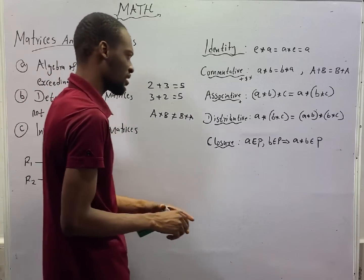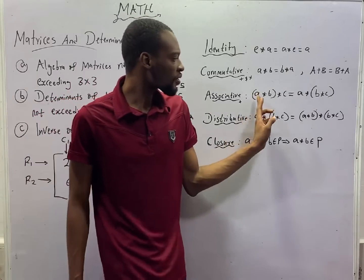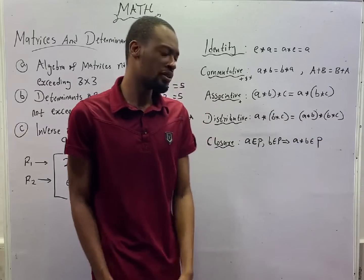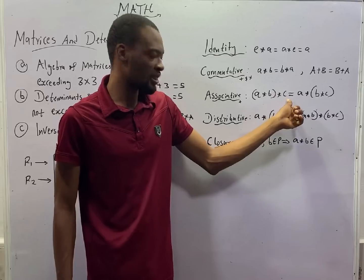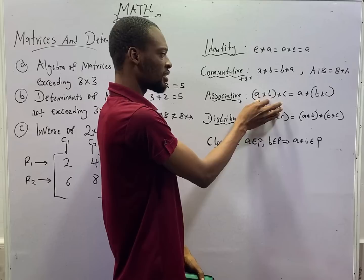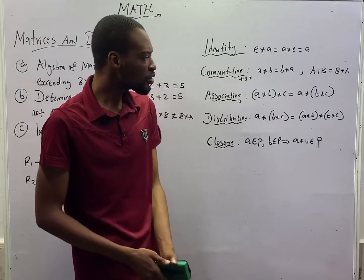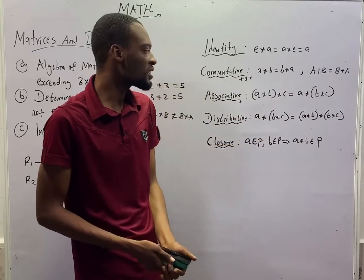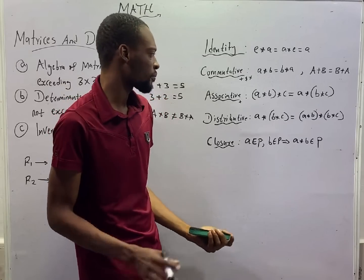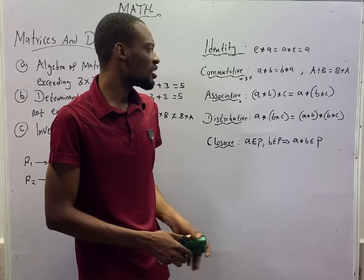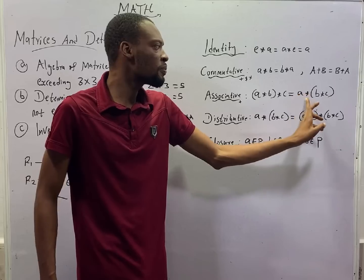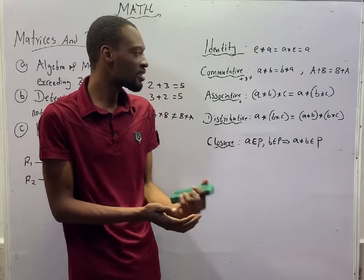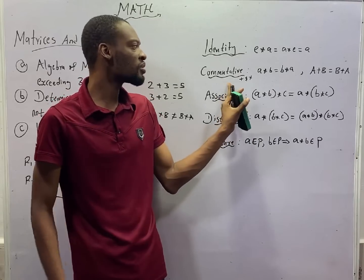Associative property of binary operations states that (a star b) star c should give the same result as a star (b star c). You solve the bracket first, then operate with the third number. For matrices, the associative property states that (a plus b) plus c equals a plus (b plus c). For matrices, addition is associative and multiplication is associative, but multiplication is not commutative for matrices. Meanwhile, for binary operations, both multiplication and addition are commutative.